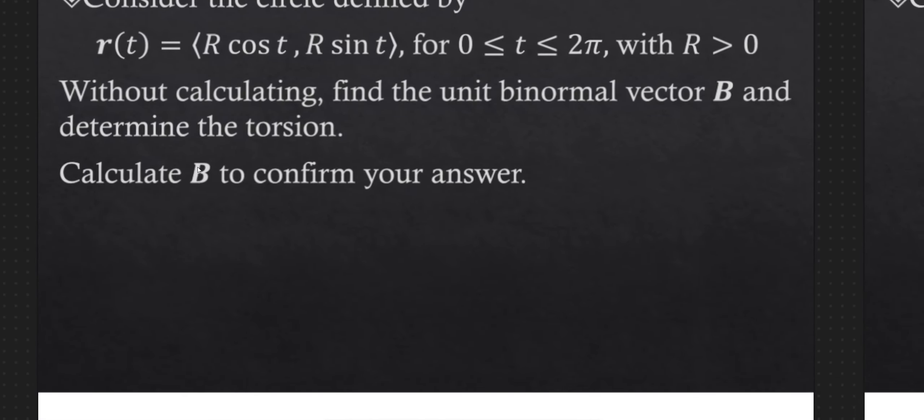And remember that b, our unit binormal vector, is t cross n. So we're also going to need to get a hold of t. This is what I mean. So calculating torsion is a very multi-step process. So it's important to break it down into what you need. We need t, we need n, and then we'll need db/ds.